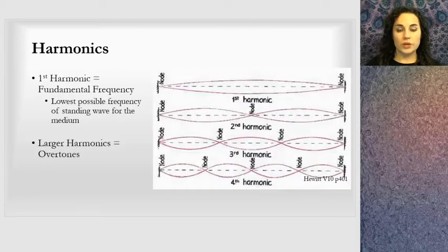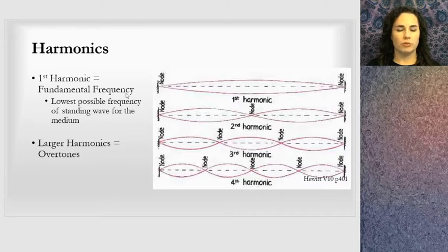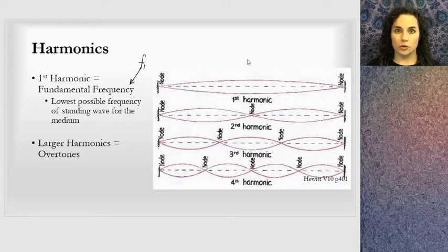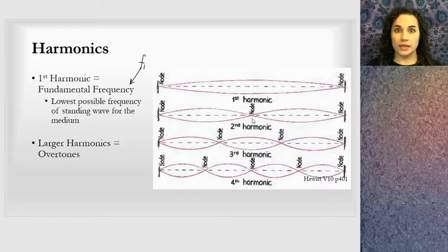This is what we call harmonics. The first harmonic, where there are no interior nodes and the string oscillates up and down, is called the fundamental frequency or F1, where n = 1. This is the lowest possible frequency for a standing wave on a medium. The ends are also called nodes. In books, they often ask how many nodes outside of the ends there are, and that number increases as the harmonics go up.